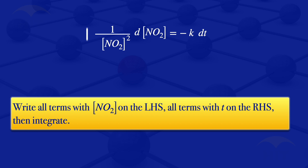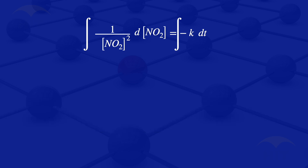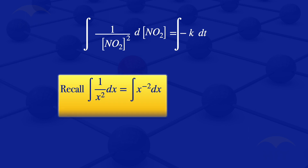Then I go on and integrate both sides. Looking at the integral on the left-hand side, to integrate it we can consider an integral of the form: the integral of 1 over x squared with respect to x.